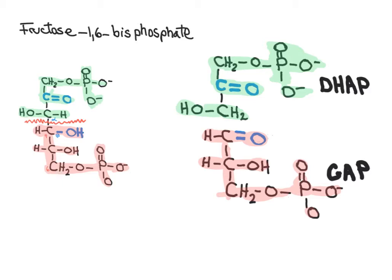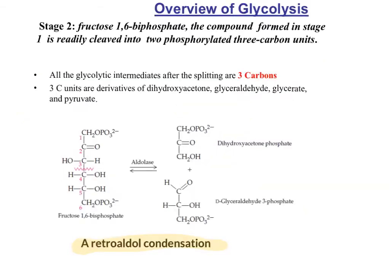Dihydroxyacetone phosphate is the ketose and glyceraldehyde-3-phosphate is the aldose. We are going to look at the mechanism of how glyceraldehyde-3-phosphate dehydrogenase participates in this cleavage. From this point, all intermediates will be phosphorylated and have three carbon units. The goal is to oxidize the carbons to carboxylic acid or ketone groups, extract electrons into NADH, and produce ATP and pyruvate.